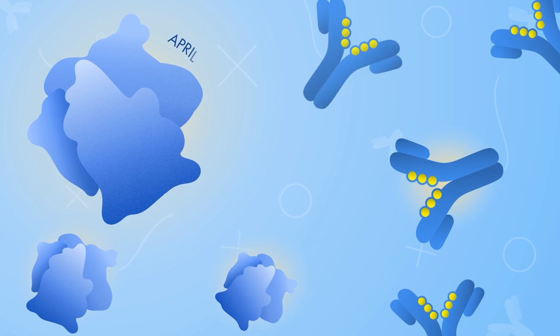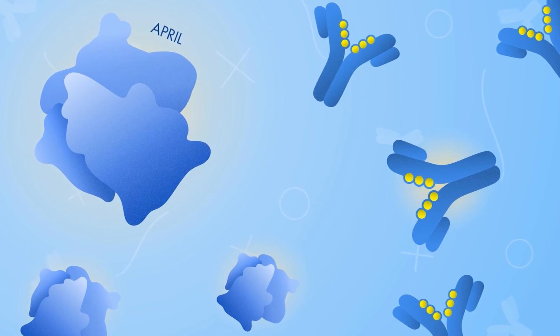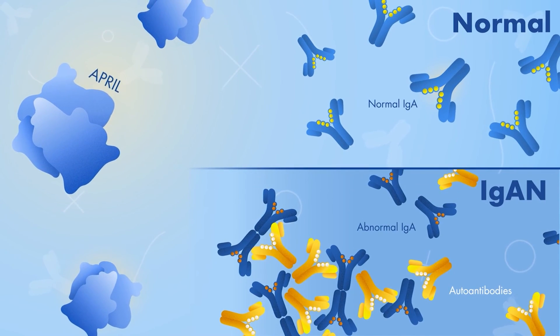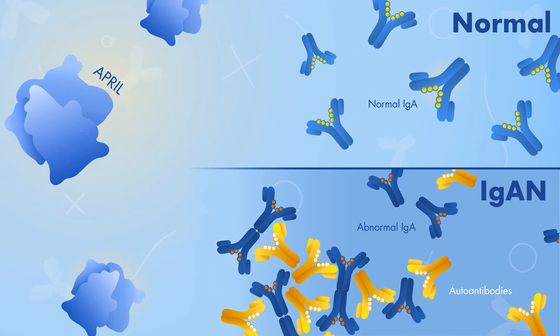Researchers believe that APRIL likely plays a key role in the formation of IgA in the body. This suggests that blocking APRIL could reduce kidney damage in patients with IgAN.